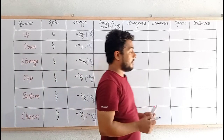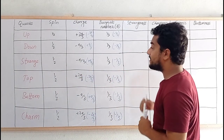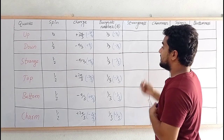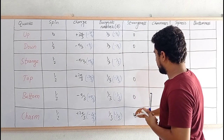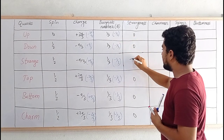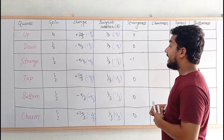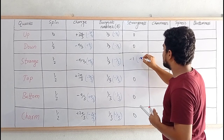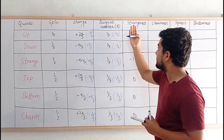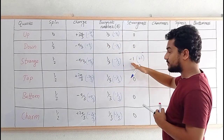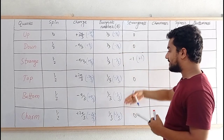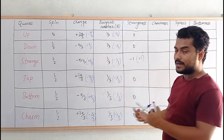Now let's write about strangeness. Only the strange quark possesses the strangeness property; all others have strangeness 0. The strangeness of the strange quark is -1, and the anti-strange quark has strangeness +1. Whatever is written in blue color represents the anti-quark properties.